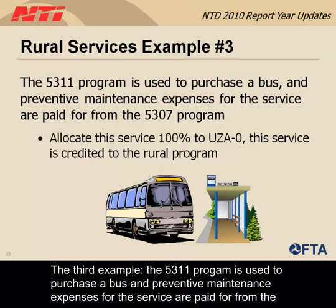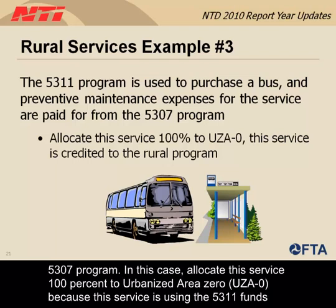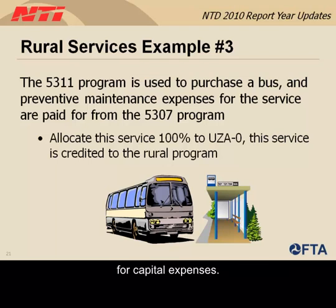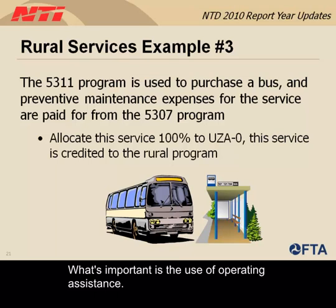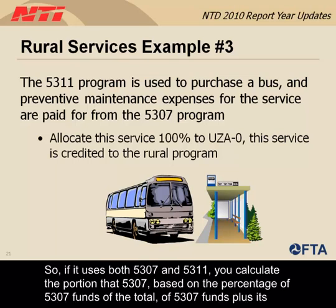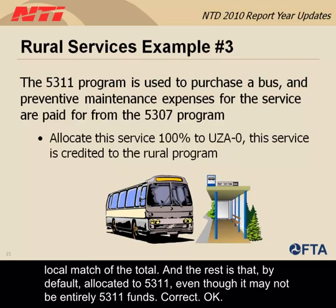A third example: if the 5311 program is used to purchase a bus and preventive maintenance expenses are paid from the 5307 program, allocate this service 100% to urbanized area 0, because the service is using 5311 funds for capital expenses. What's important is the use of operating assistance. If it uses both 5307 and 5311, calculate the portion that's 5307 based on the percentage of 5307 funds plus its local match of the total. The rest is by default allocated to 5311, even if it's not entirely 5311.